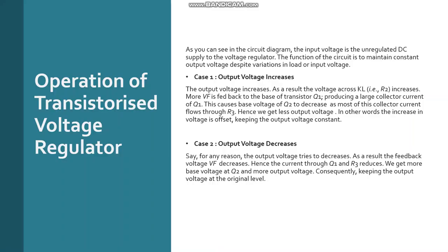Now we see the operation of the circuit. The input voltage is the unregulated DC voltage, which is the input of the voltage regulator. The function of this circuit is to maintain a constant output voltage despite variations in load or input voltage. Now let us see the first case: when the output voltage increases.